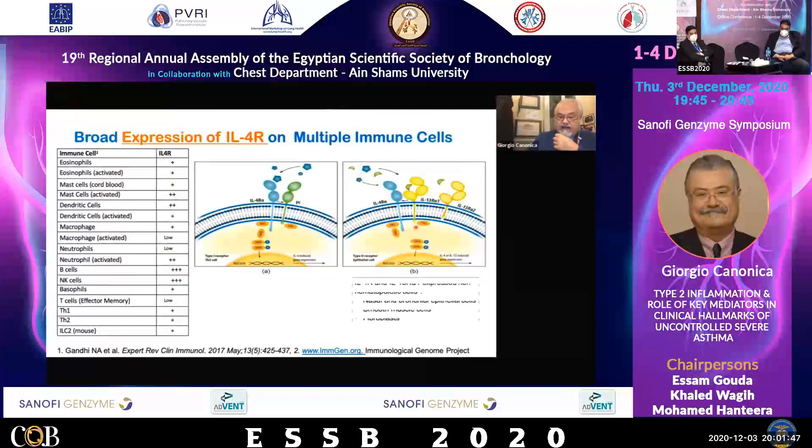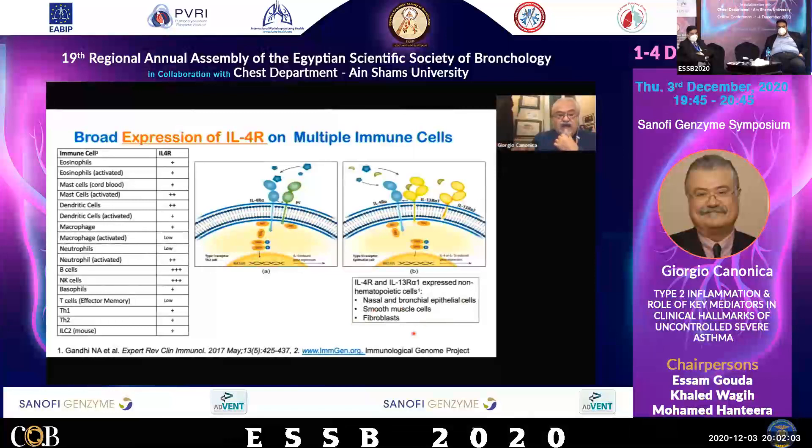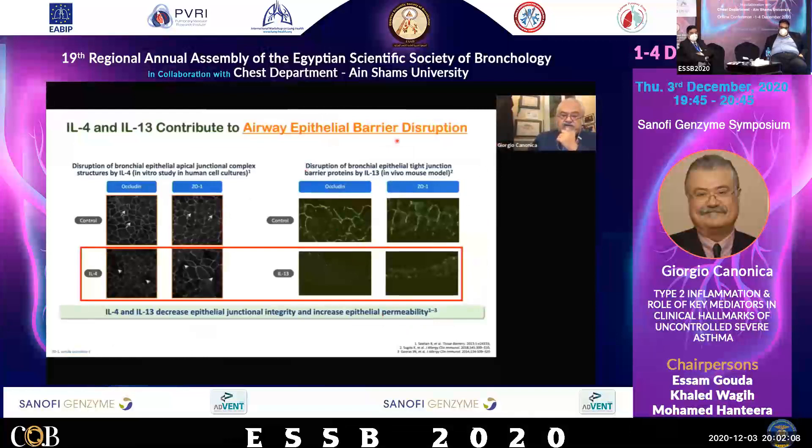We are not just talking about hematopoietic cells, but we are talking about epithelial cells, smooth muscle cells, and fibroblasts, as I will show in detail. As far as the epithelial barrier disruption, IL-4 and IL-13 have been demonstrated to be effective in disrupting the integrity of the epithelial barrier.